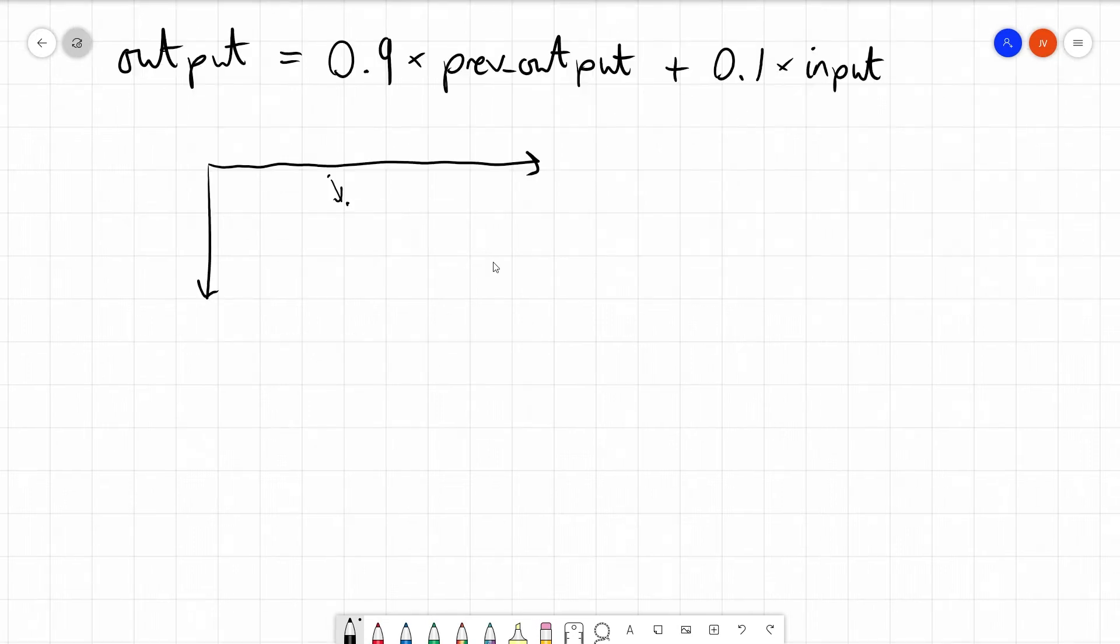So that's why, for example, an attack curve will look like this, and a release curve will look like this. Because when the target is far away, we start reducing the gain very quickly. And then as we approach the target, we slow down. And for a release, exactly the same as the target is far away, we move very quickly. And then as we reach the target, we slow down.